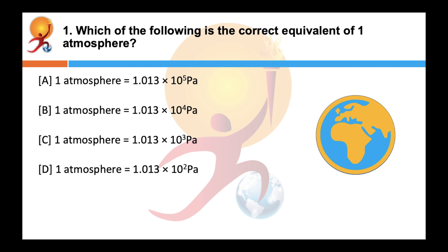Which of the following is the correct equivalent of 1 atmosphere? Correct answer is A. A common unit of pressure is atmosphere, i.e. the pressure exerted by the atmosphere at sea level. 1 atmosphere is equal to 1.013 into 10 raise to 5 Pascal.